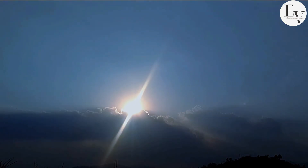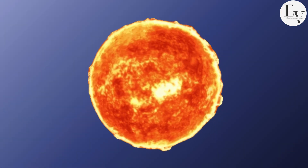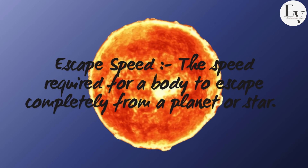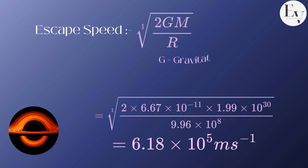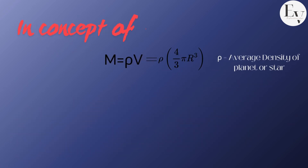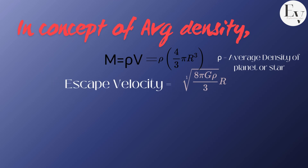Now think about the escape speed for a body at the surface of the sun. The escape speed is the speed required for a body to escape completely from a planet or star. The escape speed from the surface of a spherical mass M with radius R is equal to the square root of 2GM over R, where G is the gravitational constant. We can relate this formula to the average density of the spherical body by substituting M = ρ × V, giving the form: square root of (8πGρ/3) × R, where ρ is the average density.